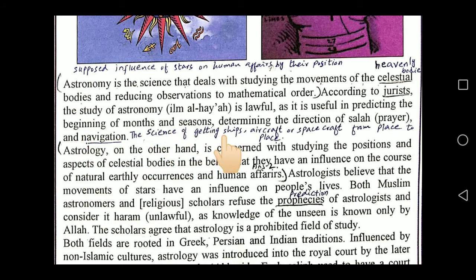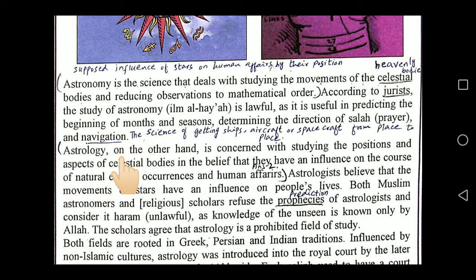Astronomy is useful in predicting the beginning of the months and seasons, determining the direction of salah, and navigation. Such knowledge relating to the movement of stars that is useful for human beings is knowledge we can acquire.